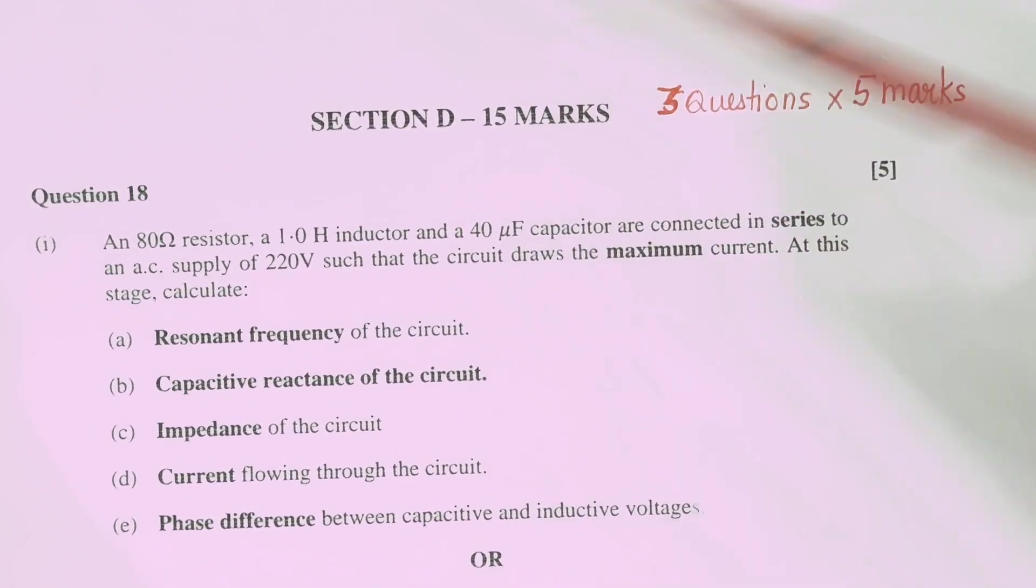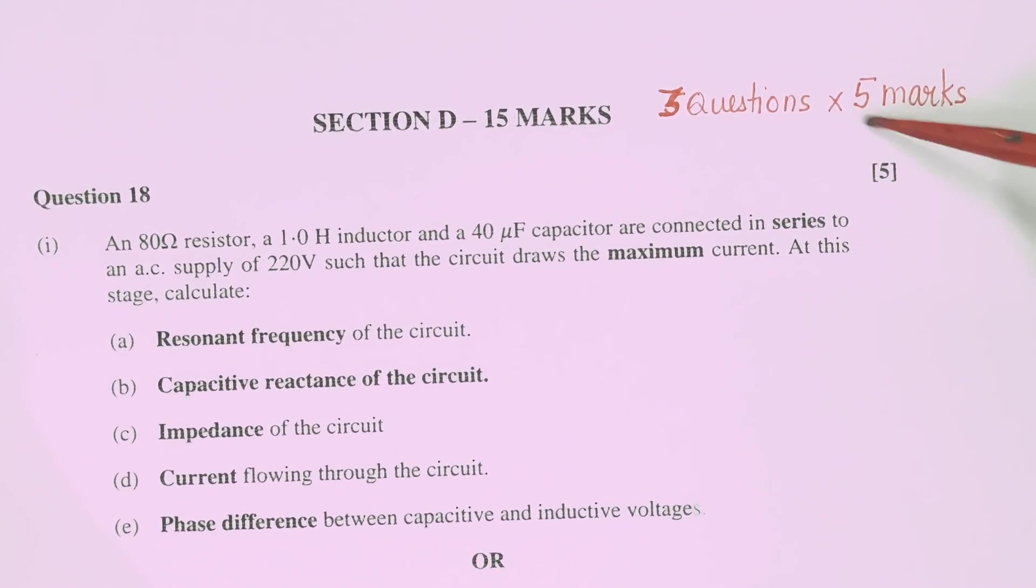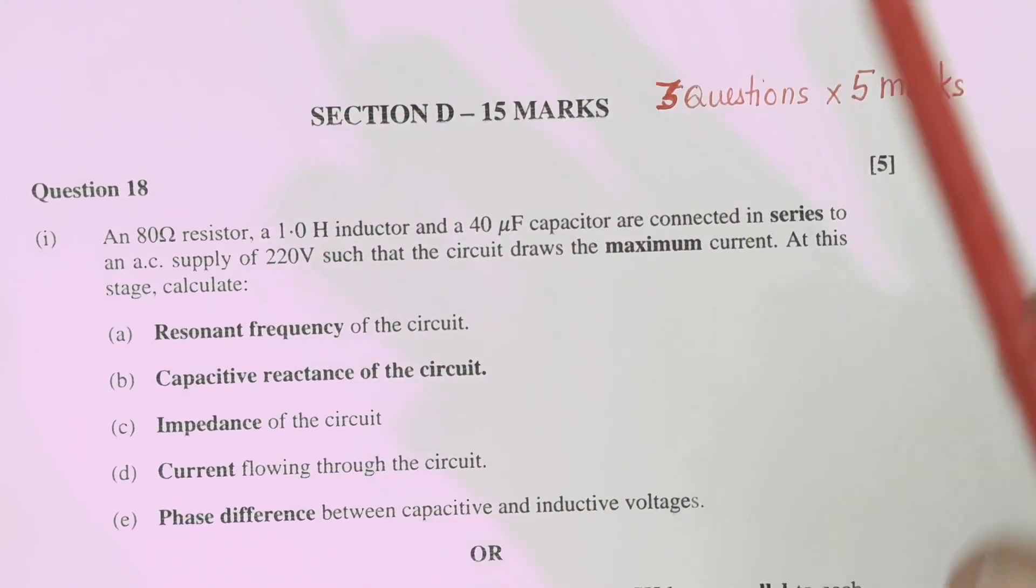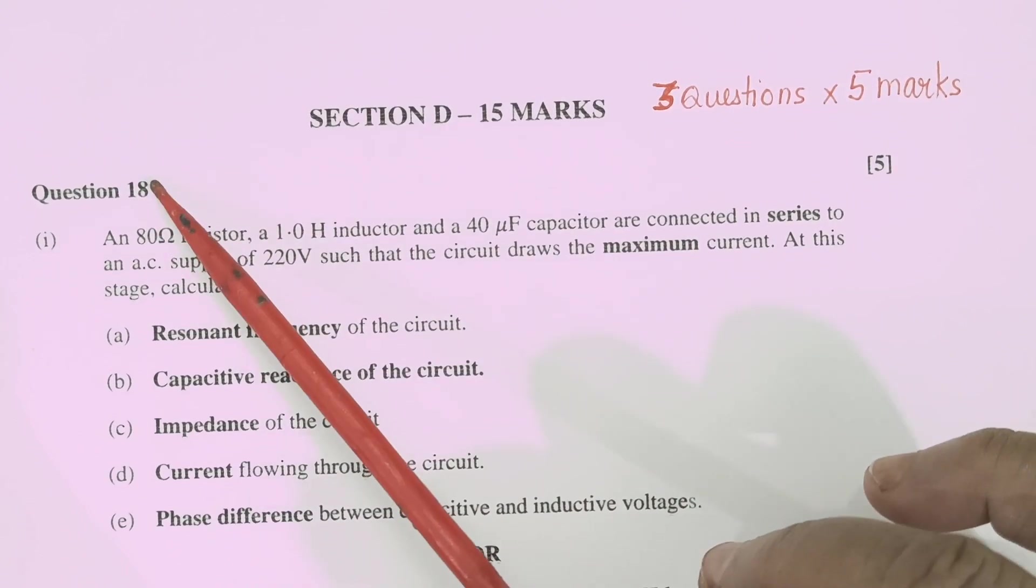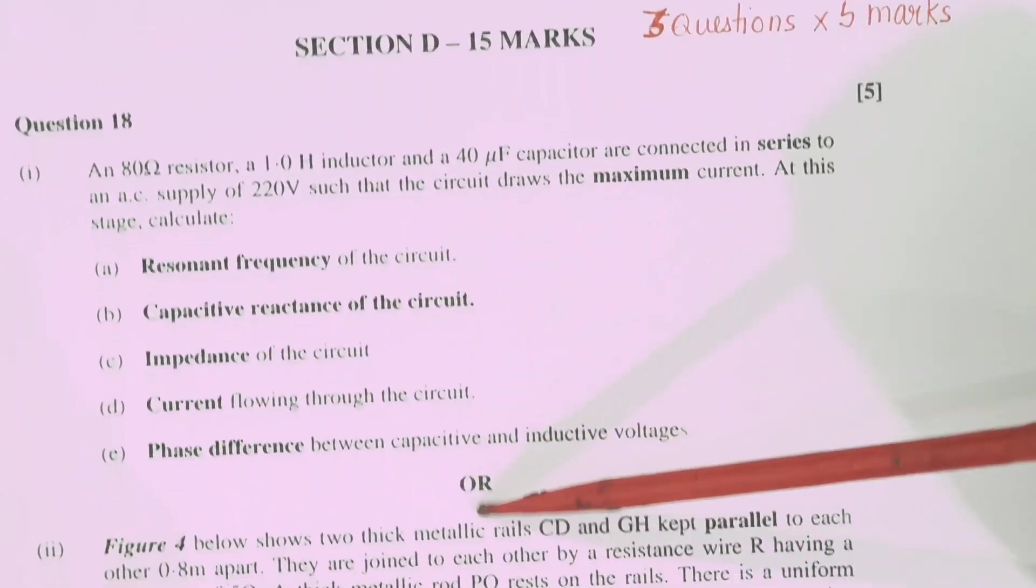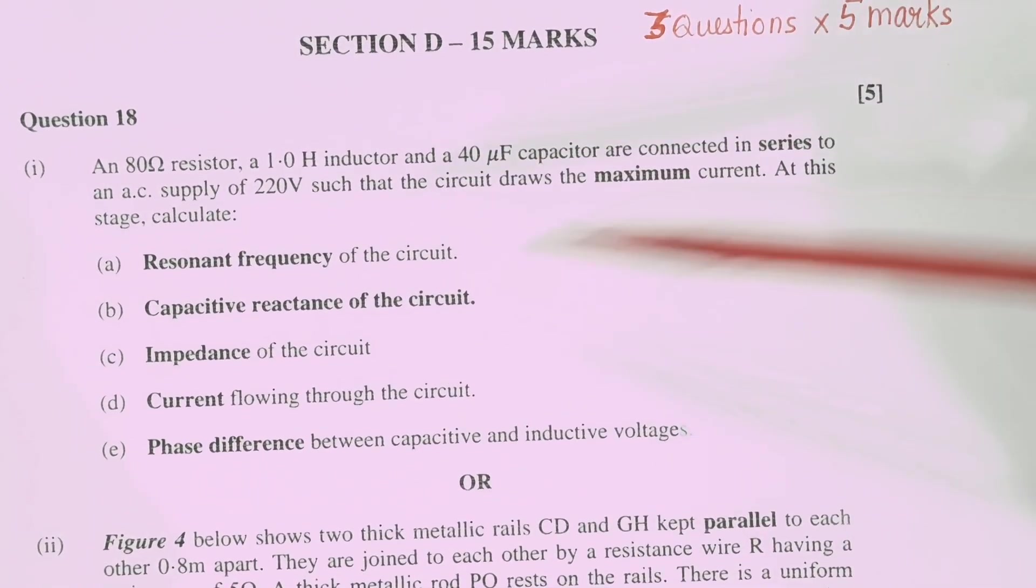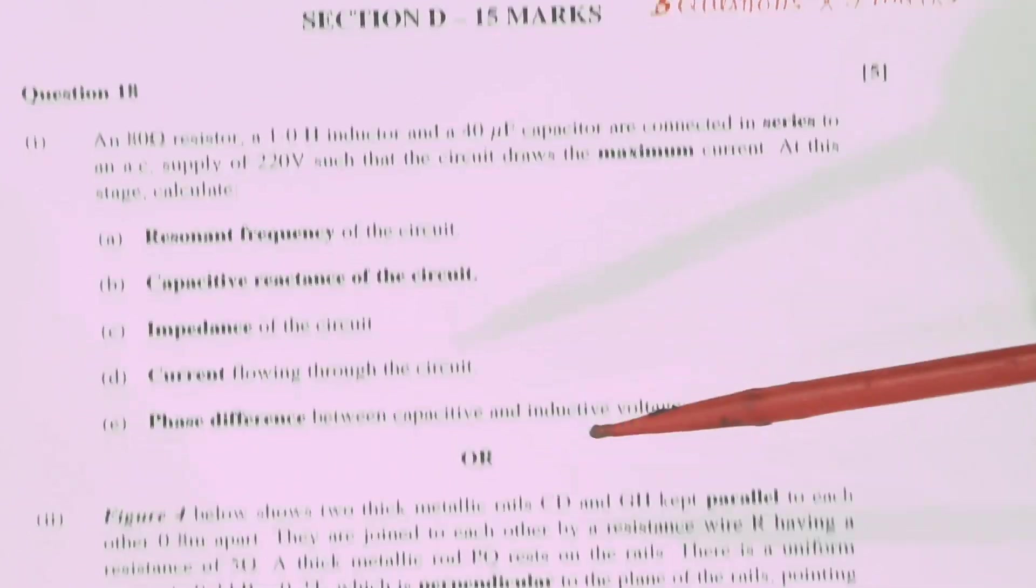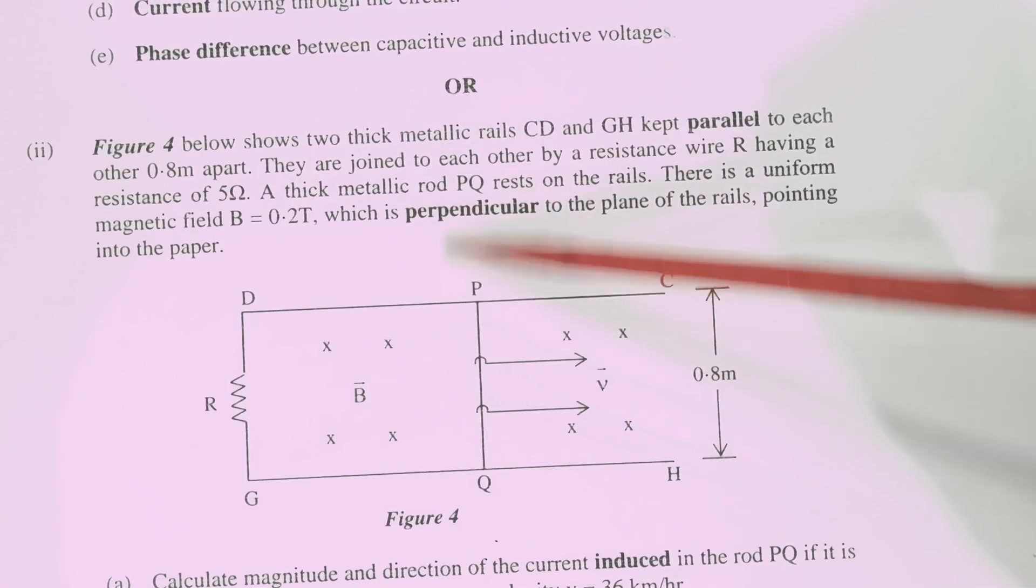It carries 15 marks. 3 questions. Each question carries 5 marks. In this section in all the 3 questions you will have a choice. For example in question number 18 you are having 5 questions of 5 marks. Either you select this one. This is from AC. Or you select this one. This is from electromagnetic induction.